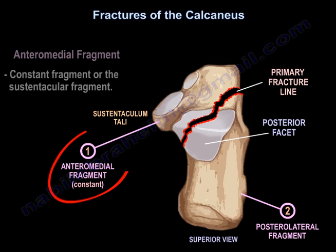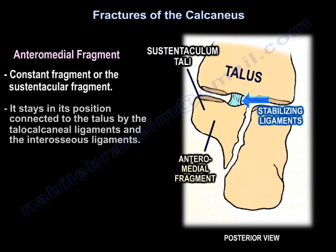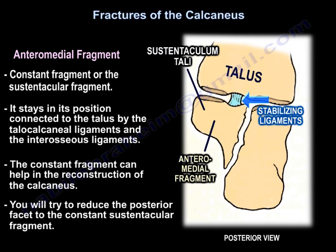The intermedial sustentacular fragment is a constant fragment, and it is held in its position by the ligaments. The sustentacular fragment, or constant fragment, stays in its position connected to the talus by the talocalcaneal ligaments and the interosseous ligaments, as you can see here in this diagram. The constant fragment can help in reconstruction of the calcaneus.